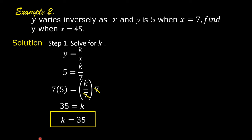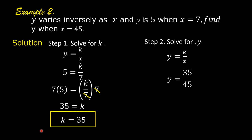We can now solve for y. Step number 2: solve for y. Write the formula again, y is equal to k over x. Substitute 35 for k and 45 for x, then solve for y. So y is equal to 35 over 45. Reduce 35 over 45 to lowest terms: divide 35 by 5 to get 7, and 45 divided by 5 to get 9. So y is equal to 7 over 9.